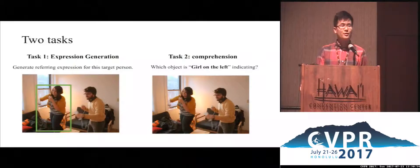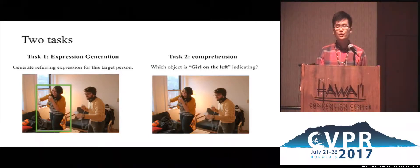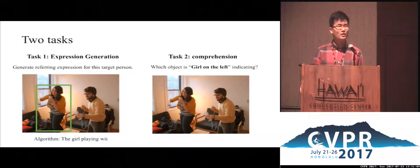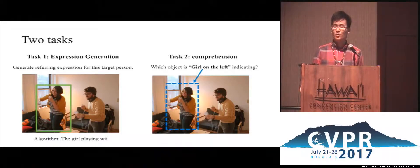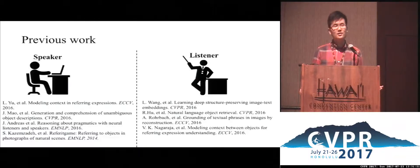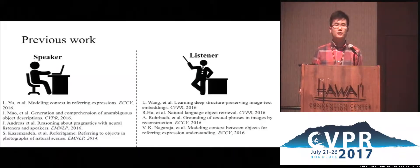In referring expressions, there are typically two tasks. The first task is expression generation: given an image and the target object, we ask the computer to generate a meaningful referring expression. The second task is expression comprehension: given an image with an expression, we ask the computer which object the sentence is describing, then check if the predicted bounding box has high overlap with the ground truth one.